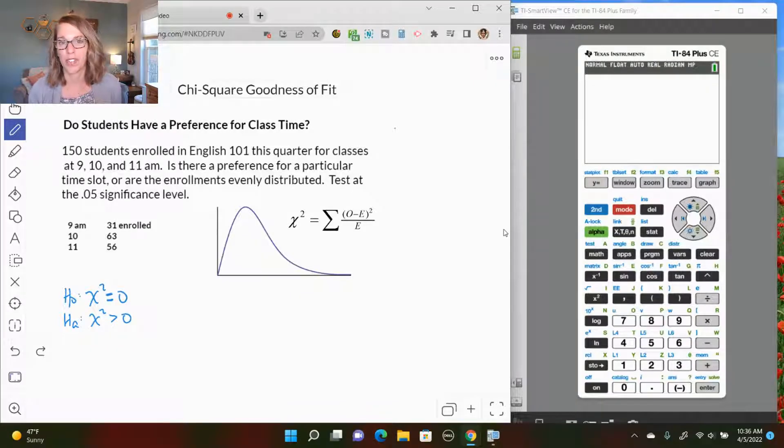The question is, do students have a preference for a class time? We've got 150 students enrolled and they are divided between the 9, 10, and 11 o'clock English sections. These are our observed data values.